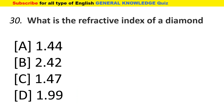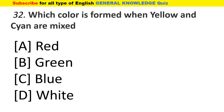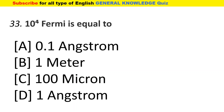The refractive index of a diamond is 2.42. The upward force on a floating body is called buoyancy. Which color is formed when yellow and cyan are mixed? The answer is green. 10 to the power 4 Fermi is equal to 1 Angstrom.